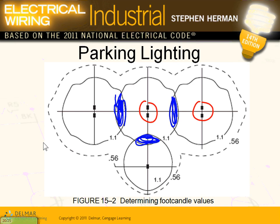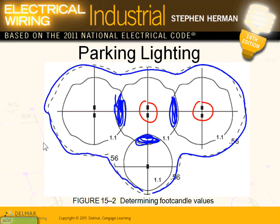You can have two heads, three heads, or four heads right on the pole, and Visual handles that well. You put your calculations on — you can make your calculations in any shape you want. Ours is usually rectangular. It will give you the max, min, average, and average-to-minimum. Max is the brightest, min is the darkest, and average-to-minimum is the difference between the brightest and the darkest.